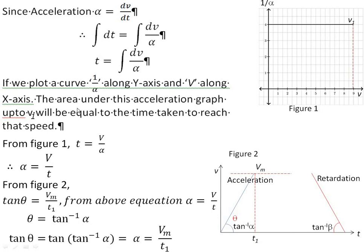Now we discuss basic terms. Acceleration is denoted by alpha; alpha equals dv/dt, the rate of change of velocity with respect to time. To find the value of time at different speeds, we integrate: t equals integration of dv divided by alpha. If we plot 1/alpha along the y-axis and speed along the x-axis, the area under the acceleration graph up to v1 equals the time taken to reach speed v1.